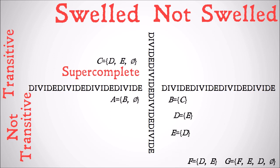What about F? F contains as its members D and E. F doesn't contain the null set, so it can't be swelled. But what about transitive? D has as its member E, and E is also in F. E has as its member D, and D is also in F. So F is transitive, but not swelled.